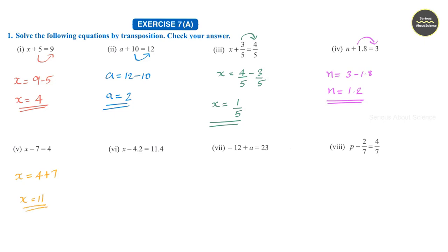Question number 6: h minus 4.2 is equal to 11.4. Here also we can shift this minus 4.2 to the RHS, so h is equal to 11.4 plus 4.2, that is, h is equal to 15.6.